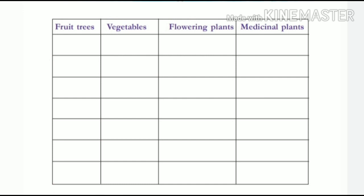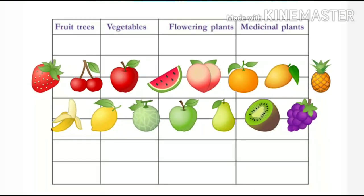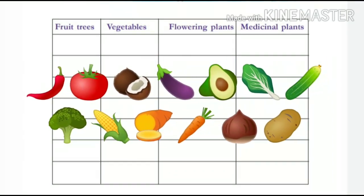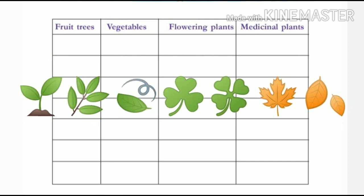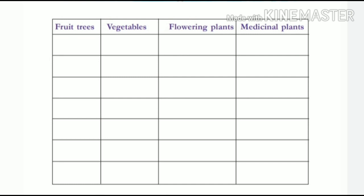You have to write — lots of columns are there. Check the table: first one is fruit tree, second is vegetables, third is flowering plants, fourth is medicinal plants. You have to go and find out the plants and write their names in each column. Don't write fruit trees under medicinal plants or flowering plants under fruit trees — don't mix them. Some plants may qualify for both columns; if so, you can write them in both. Okay? Understood?